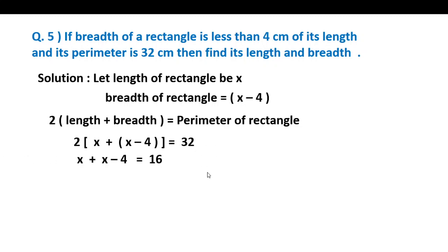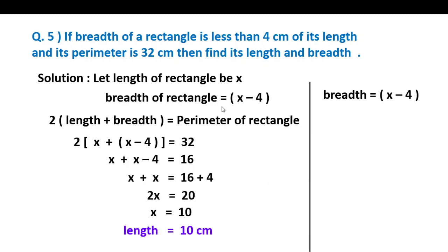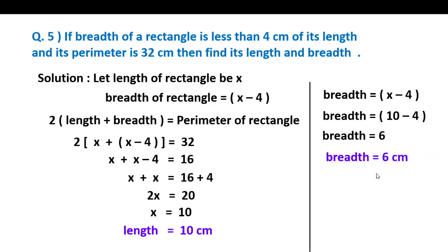Simplifying: 2x minus 4 equals 16. Adding 4 to both sides: 2x equals 20. Dividing both sides by 2: x equals 10. Therefore length equals 10 cm. The breadth equals x minus 4, which is 10 minus 4 equals 6 cm. So the length is 10 cm and breadth is 6 cm.